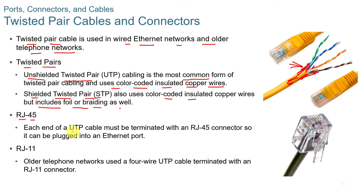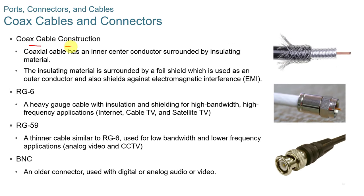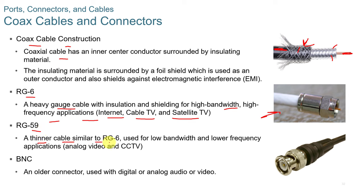Each end of a UTP cable is terminated with an RJ45 connector to plug into an Ethernet port. RJ11 is used for older telephone networks, uses a four-wire configuration, and is terminated with an RJ11 connector, which is a bit smaller. Coaxial cable is usually used for video. It has a main copper wire, insulated sheathing, braided protection against interference, and a plastic outer coating. RG6 is a heavy gauge coaxial cable with insulation and shielding for high bandwidth, high frequency applications such as internet, cable TV, and satellite TV.